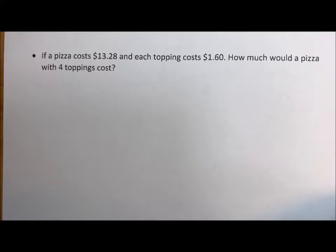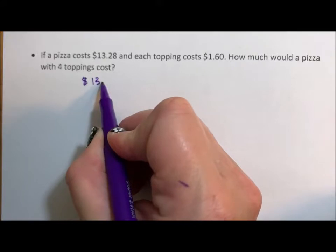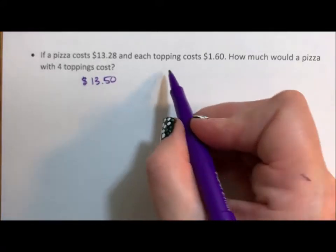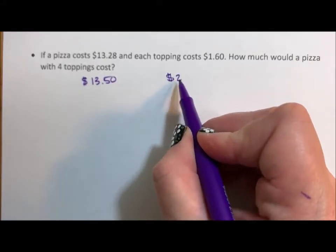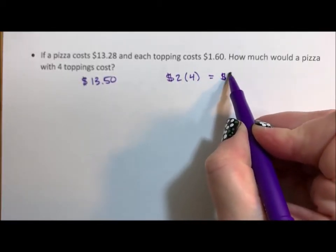So if I'm estimating this, I might take that up to be about $13.50. I take each topping up maybe to two bucks just to get really rough. Four toppings means my toppings are gonna add about $8.00.